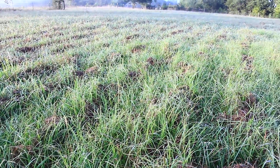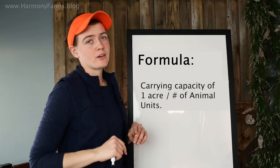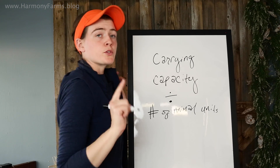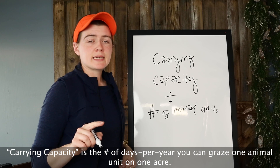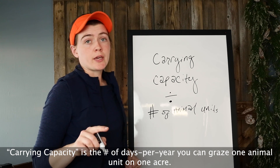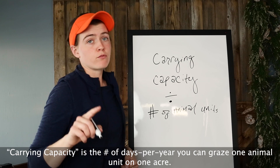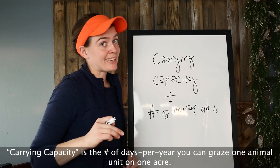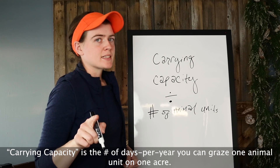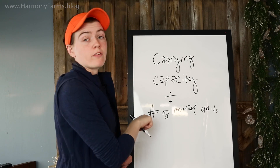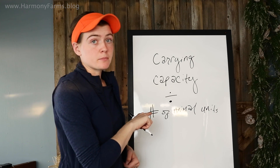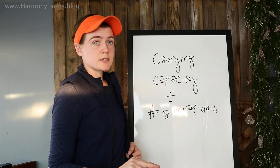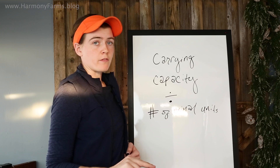The formula goes: carrying capacity of one acre divided by the number of animal units being grazed on that acre. The first step is to take the carrying capacity of the land — which you can get from your county's agricultural extension office, or just start with a safe number as I did — and divide that by the number of animal units grazing that land. Carrying capacity divided by animal units, where one animal unit equals one thousand pounds of animal.